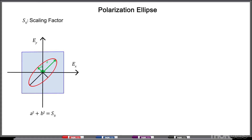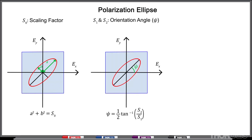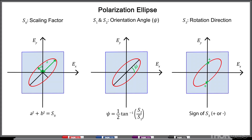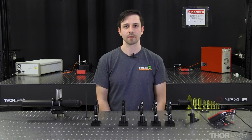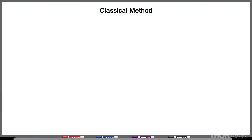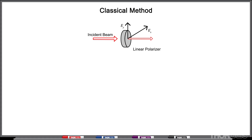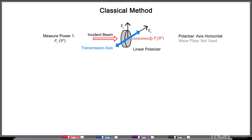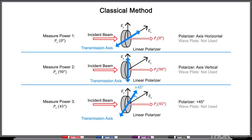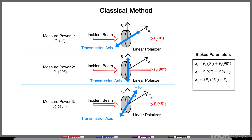In this representation, the first Stokes parameter describes the overall size of the ellipse, the second and third parameters describe the relative orientation of the ellipse within the plane, and the fourth parameter describes the handedness of the ellipse. In order to measure the Stokes parameters, there are two primary manual techniques. The first technique, known as the classical method, uses a linear polarizer and a fixed quarter wave plate. With only the linear polarizer in the beam path, the power is recorded when the linear polarizer's transmission axis is aligned horizontally, vertically, and at plus 45 degrees to the horizontal. From these first three measurements, the first three Stokes parameters can be calculated using these equations.